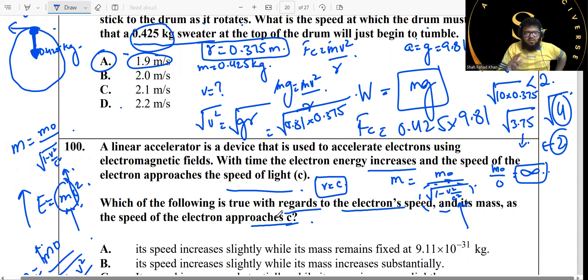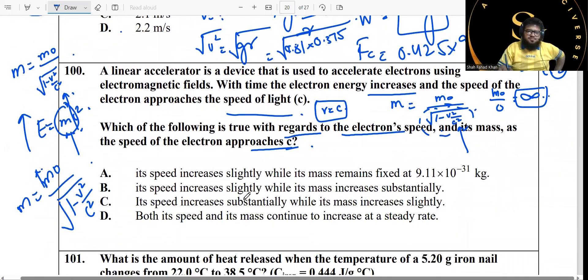Which of the following is true with regards to an electron's speed and its mass as the speed of the electron approaches C? You have this same electron, and it's moving towards the speed of light. They're asking us what happens to the speed. Obviously it was first not moving at the speed, and now it has approached the speed of light, that's a very big increase, right? It increases substantially. And what about the mass?